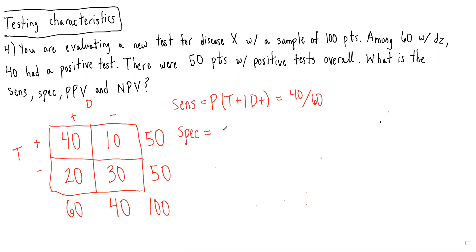Specificity equals the probability of getting a negative test result given you do not have the disease, which in this case is equal to 30 over 40.